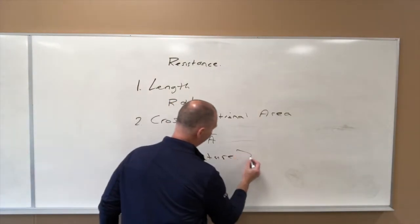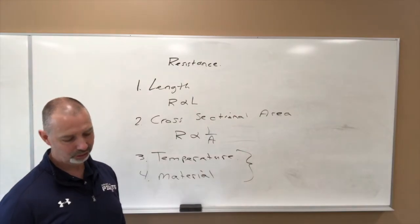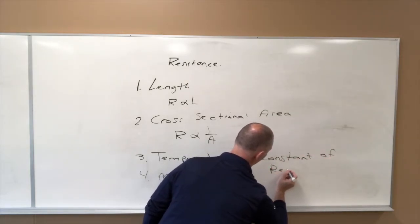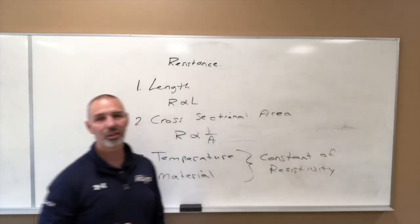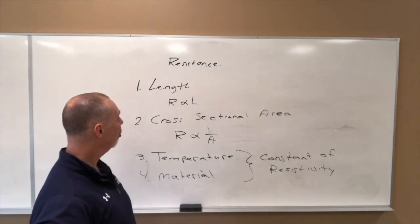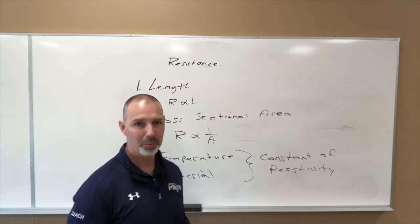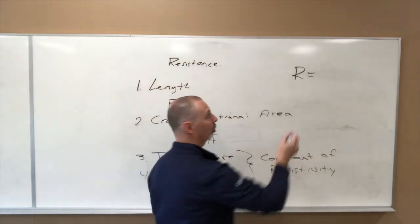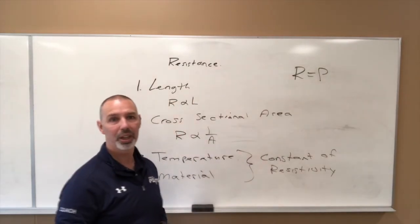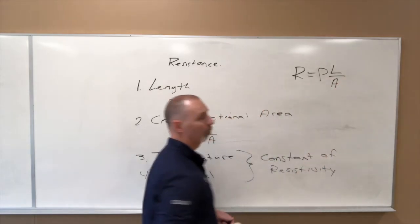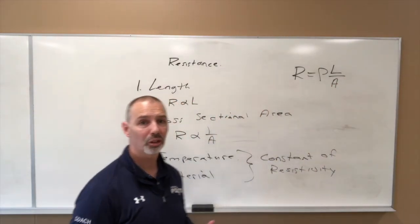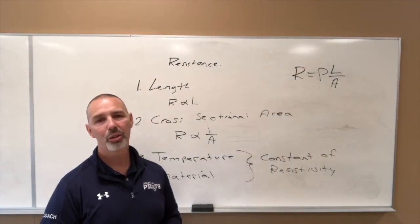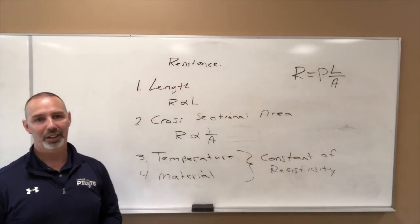The constant of resistivity, and if we were to create a formula out of these things, and we're not going to do much with this formula, maybe one or two questions here and there, but the formula becomes resistance equals the resistivity constant, which is assembled by the Greek letter rho. It's a scripted letter P, and then it is L over A. So that's the formula that we would use if we were ever asked to find the resistance of a particular material at a particular temperature with a length and a gauge, which is the width of the wire. Again, not going to do much with that, but just so you know that these are the factors that affect the amount of resistance.